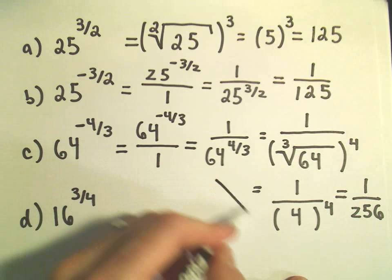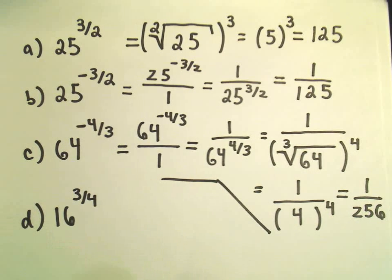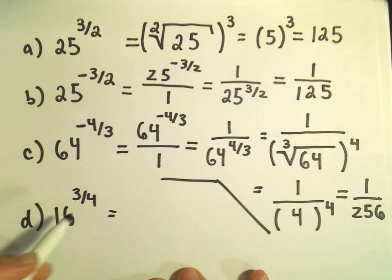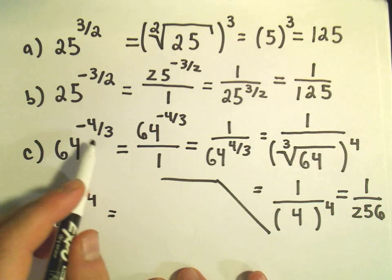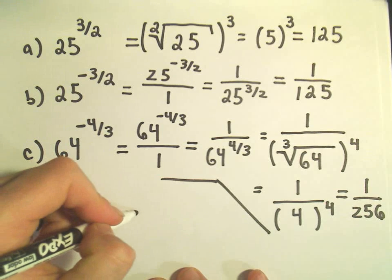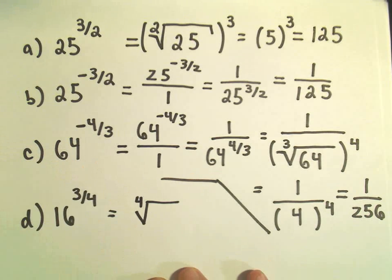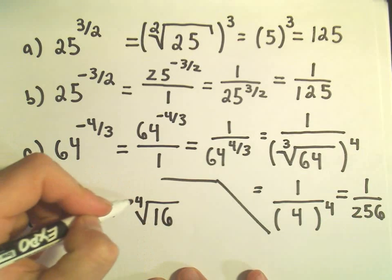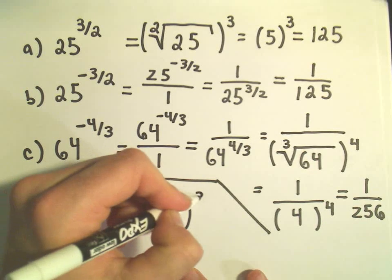Okay, so last but not least, we have 16 to the three-fourths. Again, so this has a positive exponent, so we don't have to do this trick of moving it to the denominator. So it says this time I'm going to take the fourth root of the number 16, and then I'm going to cube that number.